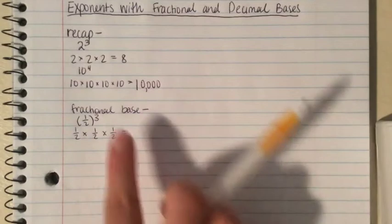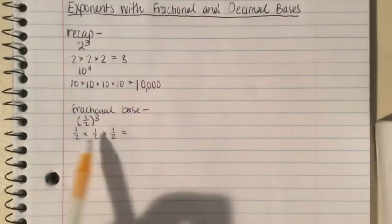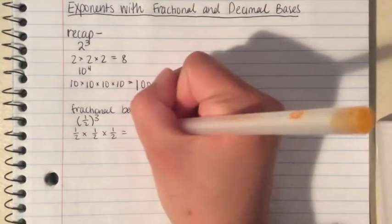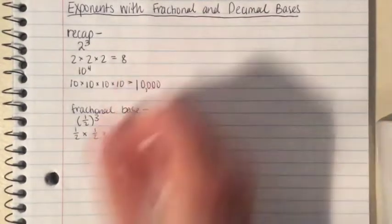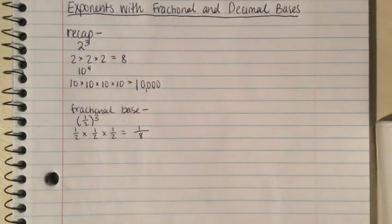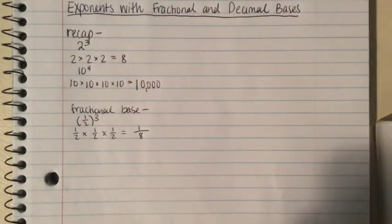the same as if you were just multiplying fractions. 1 times 1 times 1 for the numerators, 1 over 2 times 2 times 2, which is 8. So basically it's the same thing, just with fractions, so it's a little bit harder.